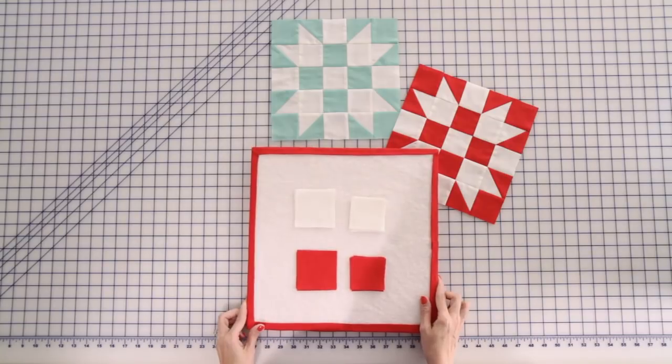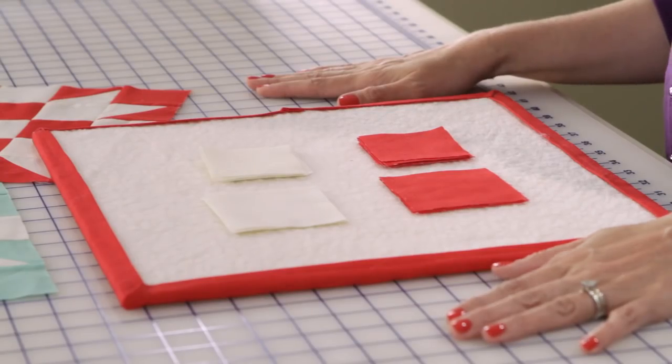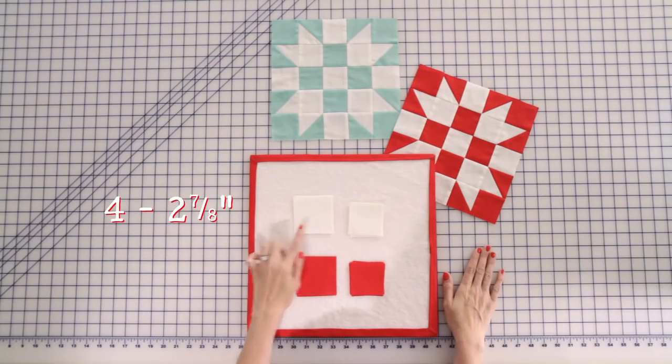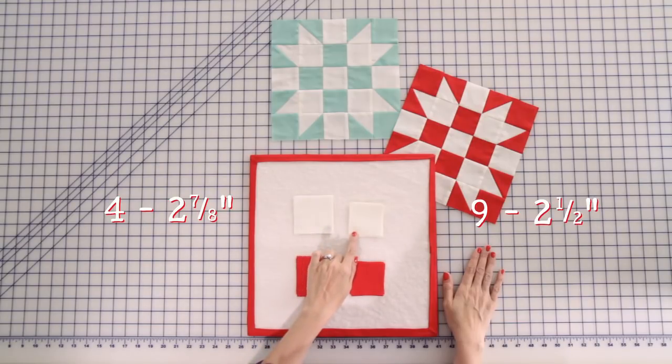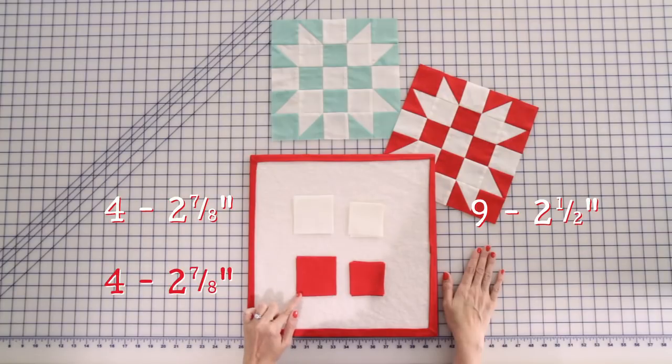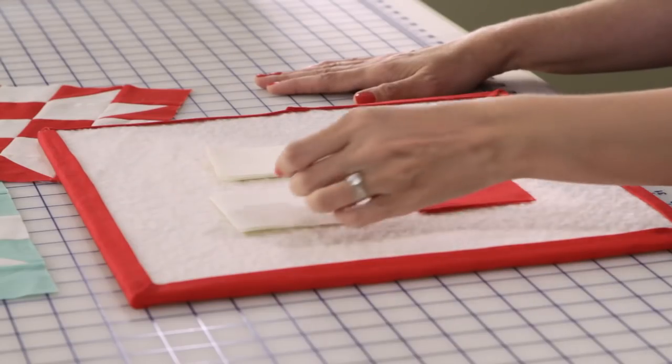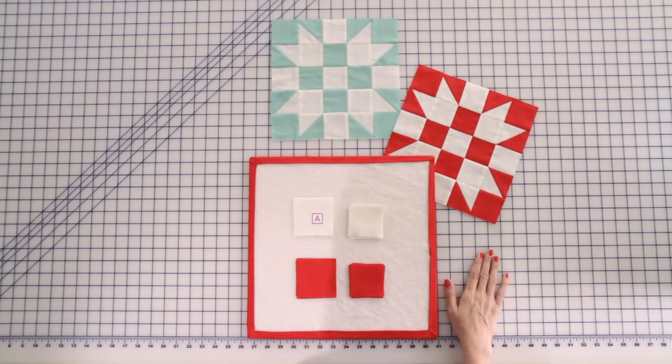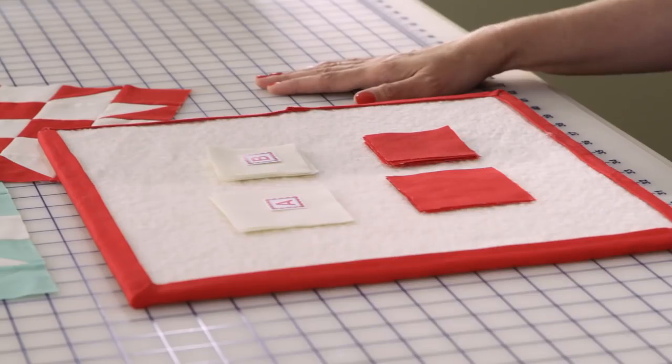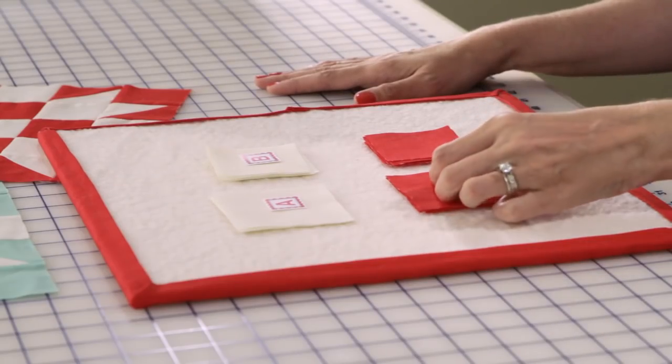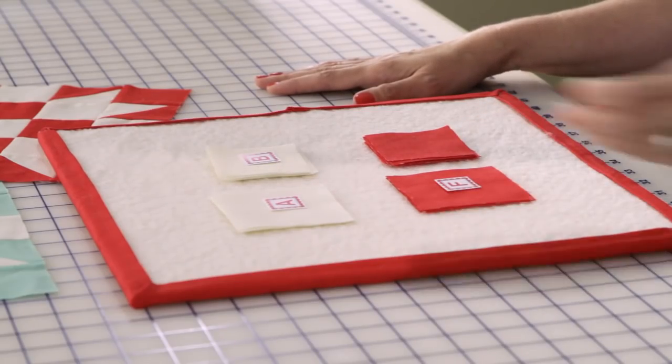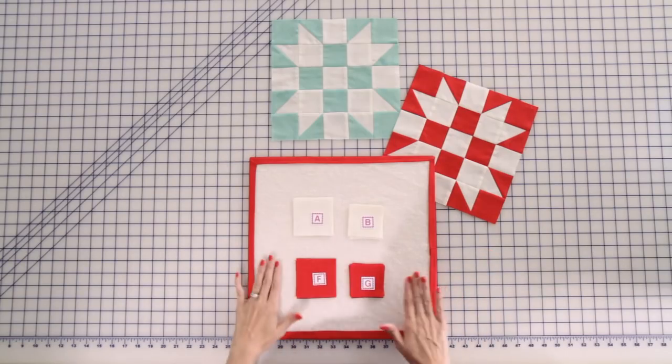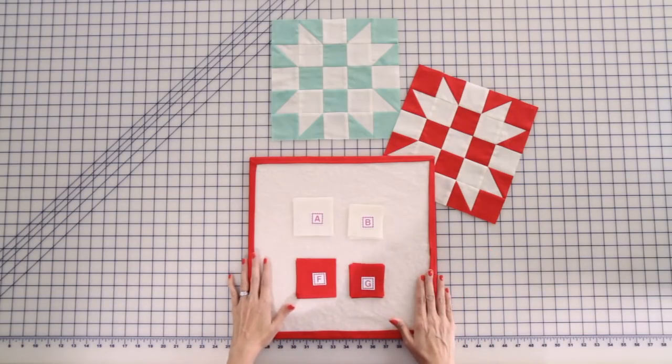First, we're going to cut our fabrics. For our background, we need four 2 7⁄8 inch squares and nine 2 1⁄2 inch squares. For your contrasting fabrics, we need four 2 7⁄8 inch squares and eight 2 1⁄2 inch squares. We're going to use these labels that work well with any It's Sew Emma or Fat Quarter Shop pattern. Since in our patterns we put the labels, it's going to save you a lot of time later. So I've got everything labeled, cut, ready to go. Let's start sewing.